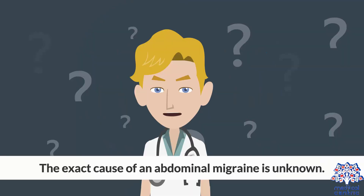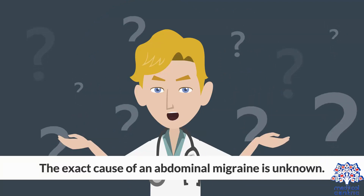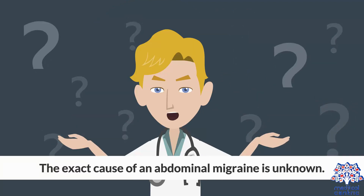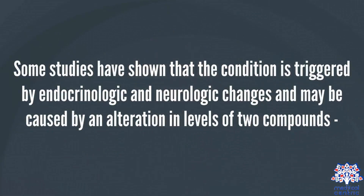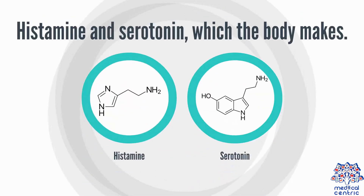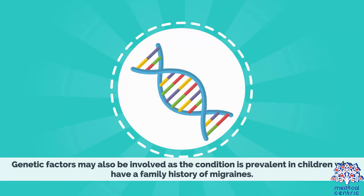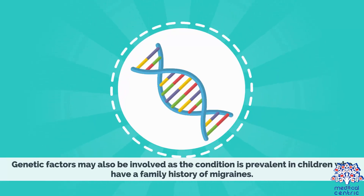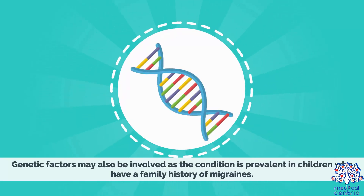The exact cause of an abdominal migraine is unknown. Some studies have shown that the condition is triggered by endocrinologic and neurologic changes, and may be caused by an alteration in levels of two compounds, histamine and serotonin, which the body makes. Genetic factors may also be involved, as the condition is prevalent in children who have a family history of migraines.